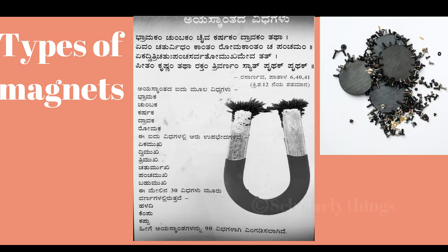Brahmakam Jumbakam Chayvakarshakam Dravakam Tatha, Evam Chaturvidham Kantam Romakantam Chapanchamam, Yeka Dvitri Chathuhu Panchasarvatomukhamevatath Peetam Krishnam Tatharaktam Trivaranam Syat Prithak Prithak — The magnets were classified into 90 types.